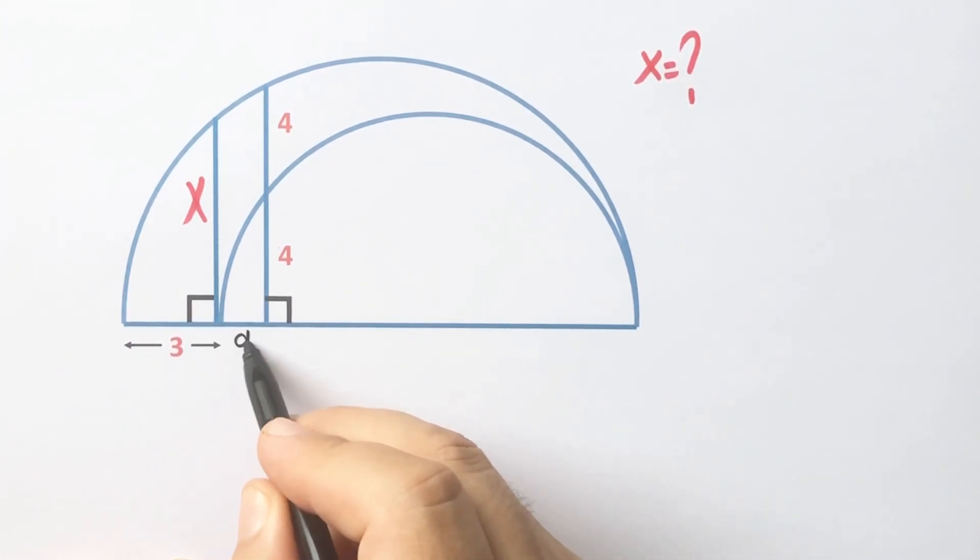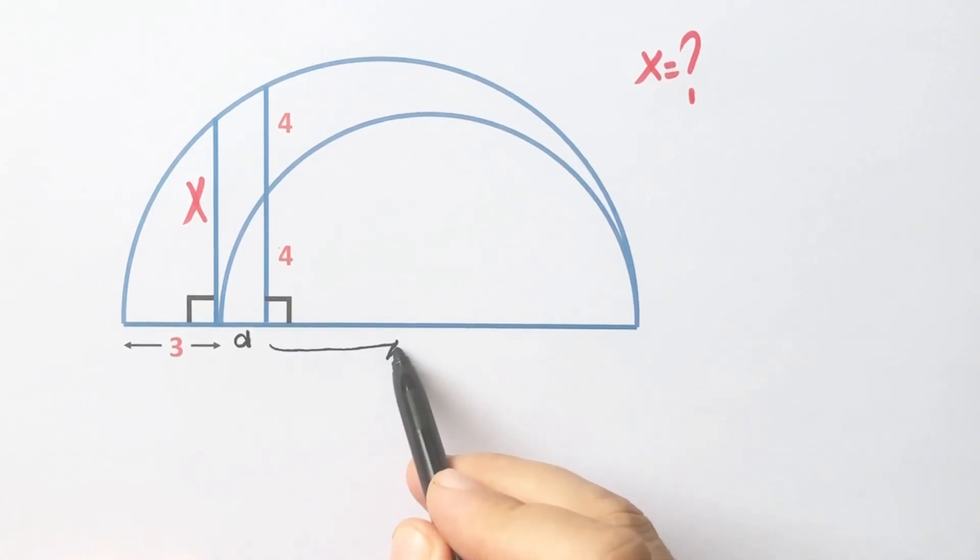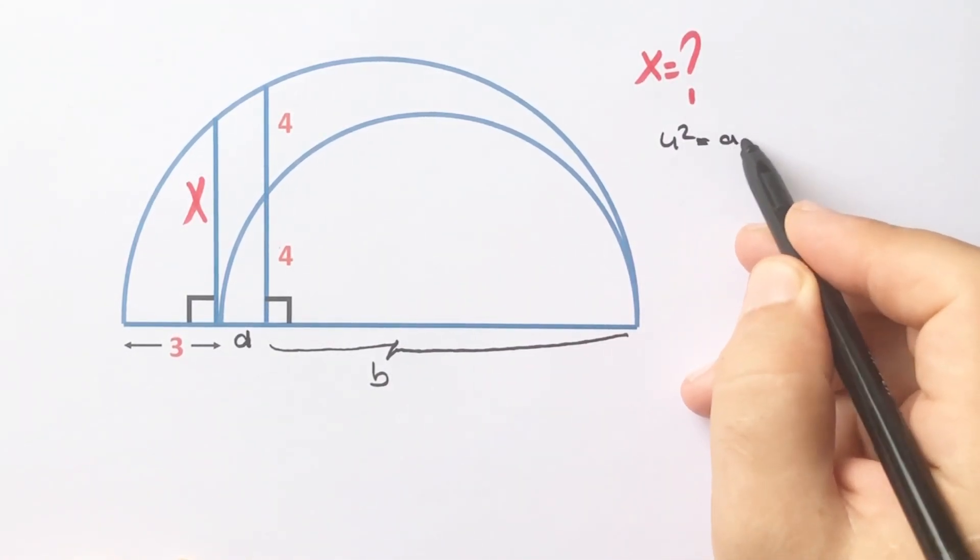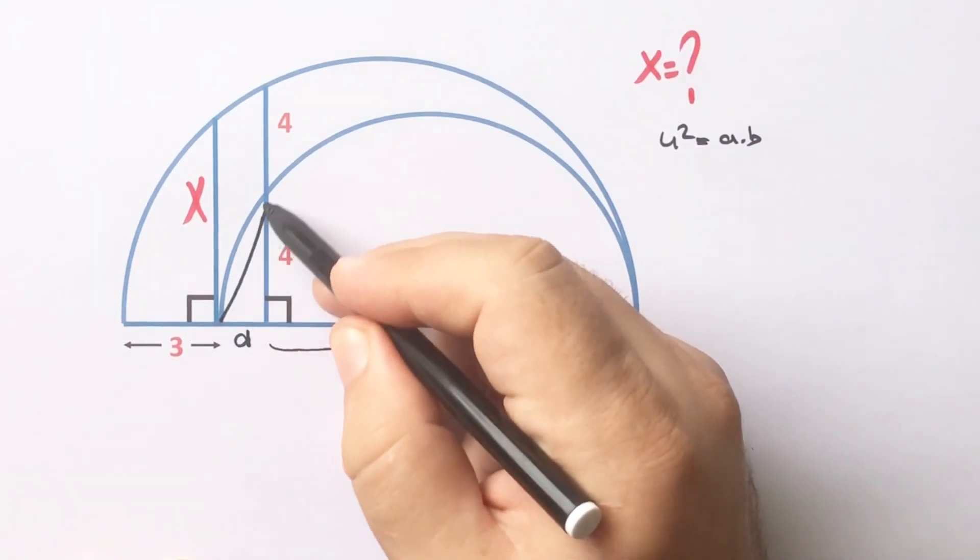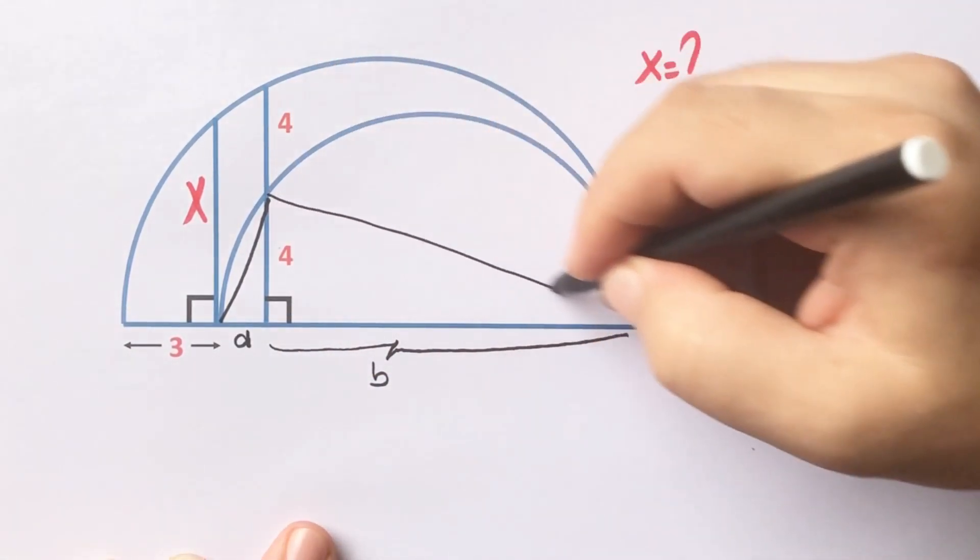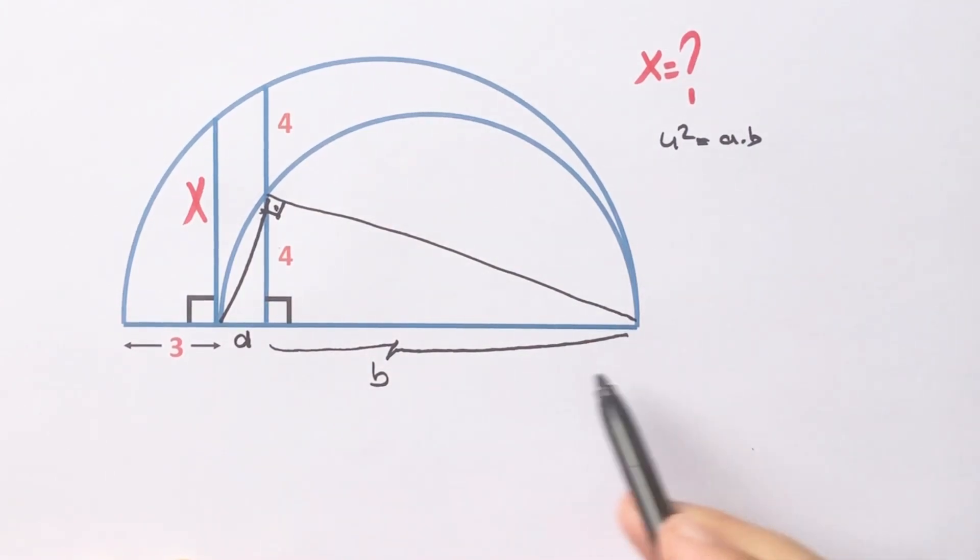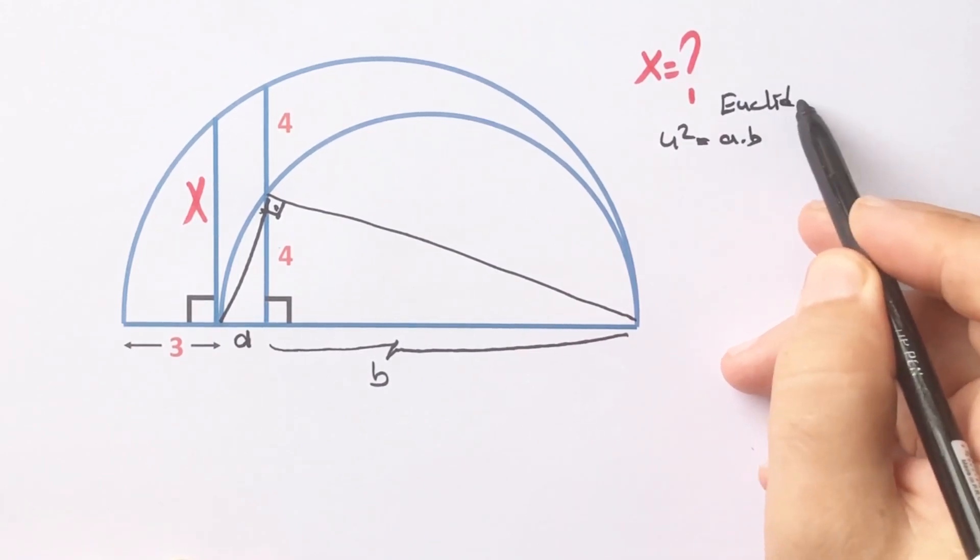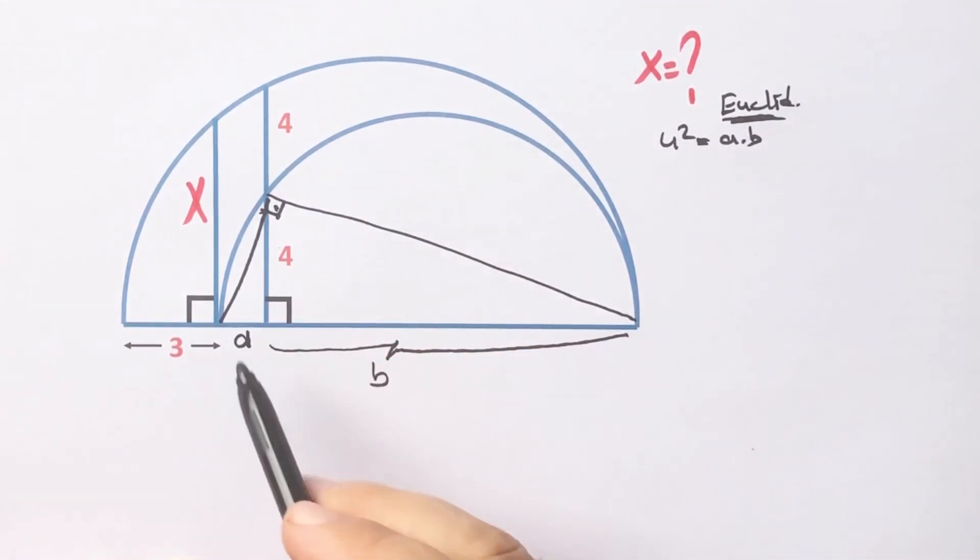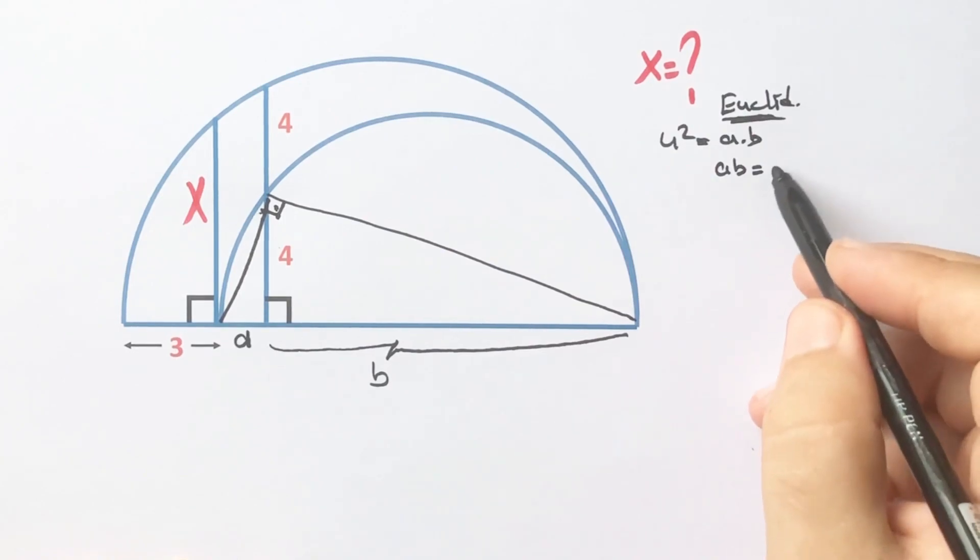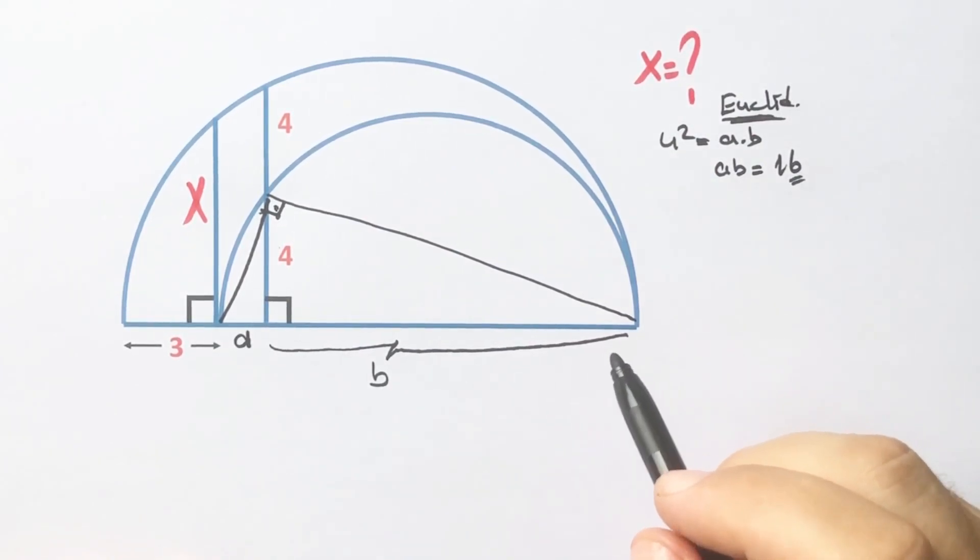First of all, let's call here 'a' units, and this length I'm going to call 'b'. So four squared equals b. Why? Because if we connect here, this angle must be 90 degrees because it's opposite of the diameter. Therefore, according to the Euclidean theorem, the square of four must equal a times b, so a times b equals 16 units.